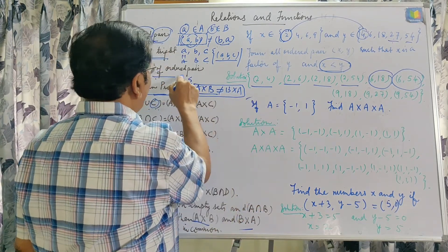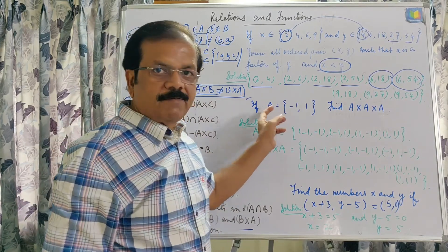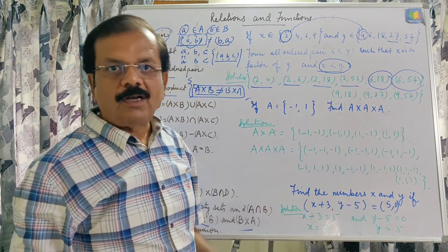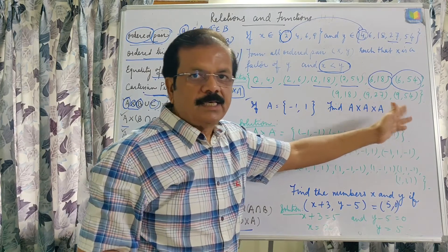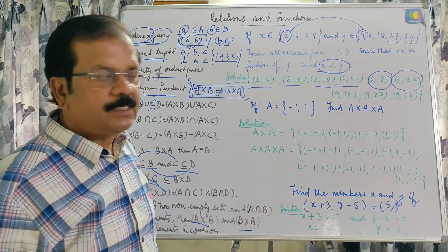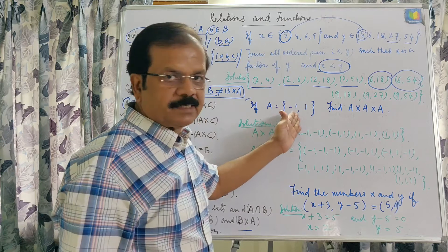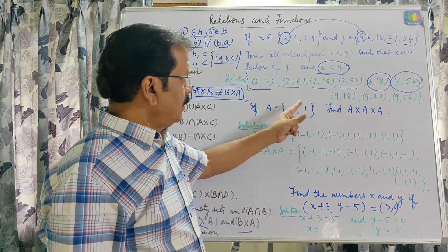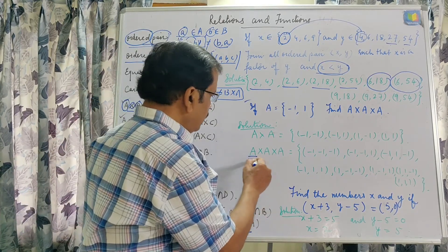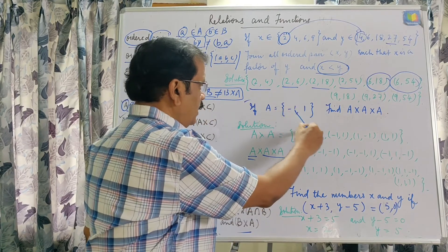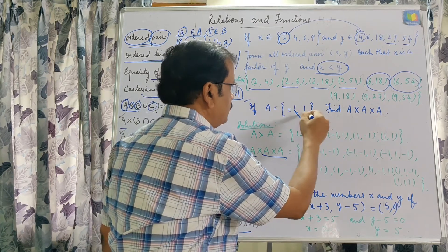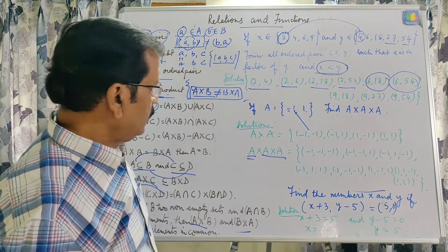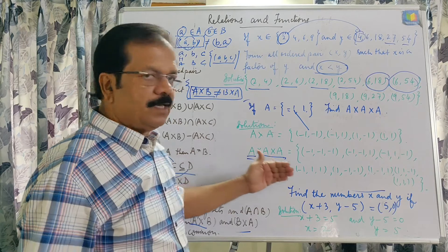The next question is related to ordered triplets: if set A = {−1, 1}, find A × A × A. This is an ordered triplet between the same set. First we find A × A: that gives (−1,−1), (−1,1), (1,−1), (1,1). Then we find the triplet A × A × A by pairing each element of A with all elements of A × A. We get 8 elements in this ordered triplet.